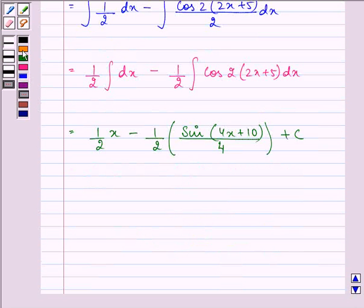So we have the answer as x by 2 minus sine 4x plus 10 divided by 8 plus c.